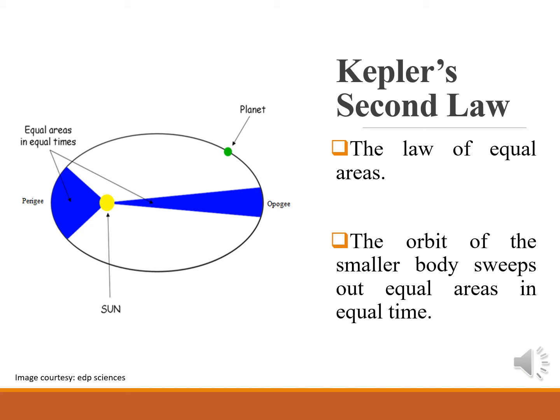Kepler's second law, also called the Law of Equal Areas, states that the orbit of the smaller body sweeps out equal areas in equal time. As the orbit is not circular, the planet's kinetic energy is not constant in its path. It has more kinetic energy near perigee, the nearest point, and less kinetic energy near apogee, the farthest point. This implies more speed at perigee and less speed at apogee. From Kepler's law, it can be stated that the aerial velocity of a planet revolving around the Sun in an elliptical orbit remains constant, which implies the angular momentum of a planet remains constant. Here, the areas shown in blue color are equal areas covered in equal time.